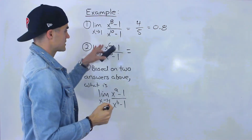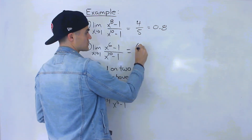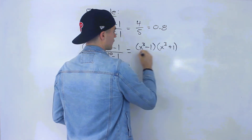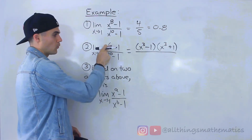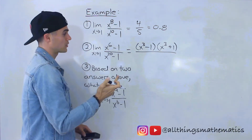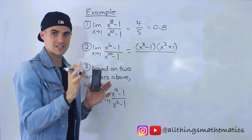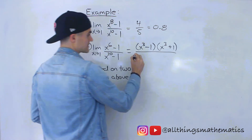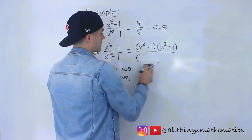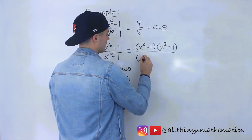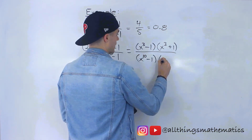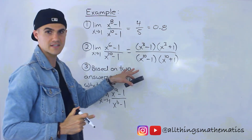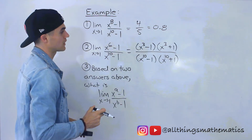For the second limit, we have x to the power of 6 minus 1 in the numerator. First, let's do a difference of cubes: x to the power of 3 minus 1 times x to the power of 3 plus 1. Again, plugging in 1 makes both numerator and denominator 0, so we need to isolate x minus 1 as a factor. The denominator x to the power of 20 minus 1 factors by difference of squares into x to the power of 10 minus 1 times x to the power of 10 plus 1.